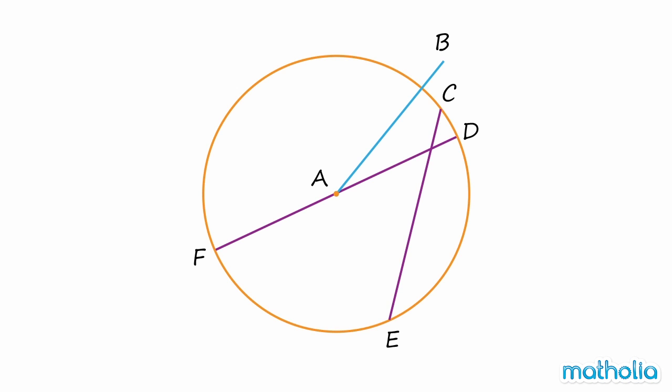Let's identify a diameter in this circle. Start with the line AB. AB is a straight line, but it does not pass through the center of the circle, and its end points are not on the circle. So it's not a diameter.